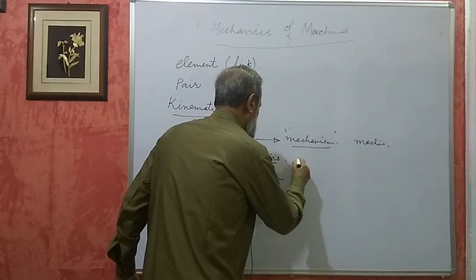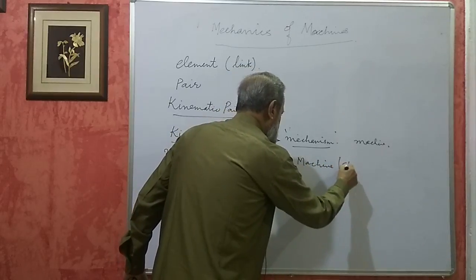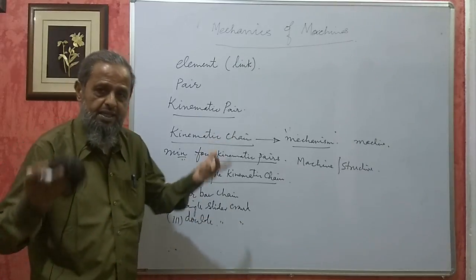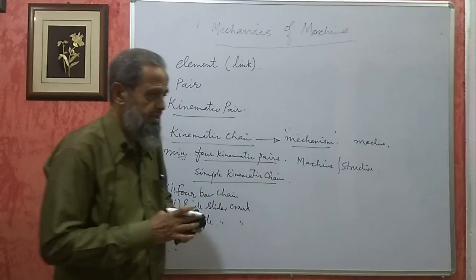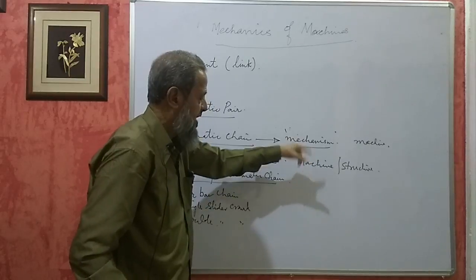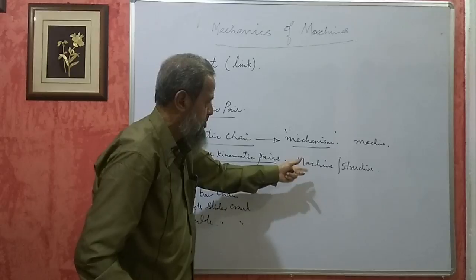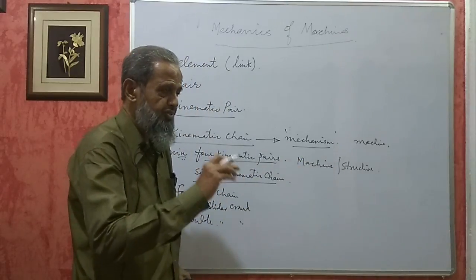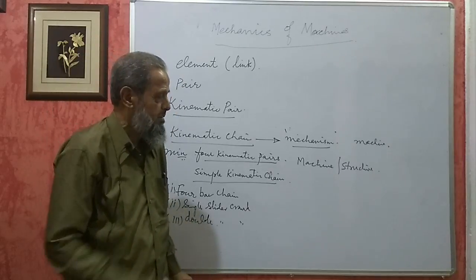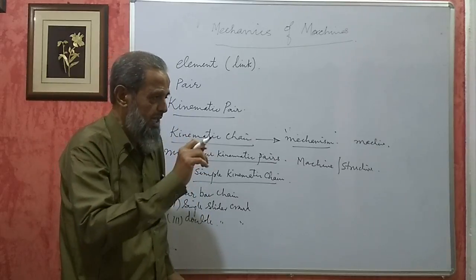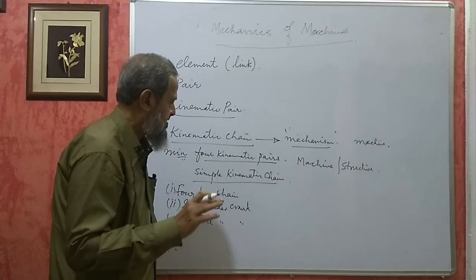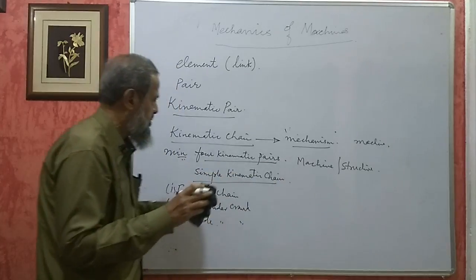You should also know the difference between a machine and a structure. A structure is a building, a bridge, or any civil construction — it is also an assembly of parts. The difference is that in a machine, the parts transmit not only forces but also motion; there is input, output, and efficiency. In a structure, the parts — generally beams and columns — transmit only forces from one element to another. There is no input, no output, no efficiency, and no motion between the parts.